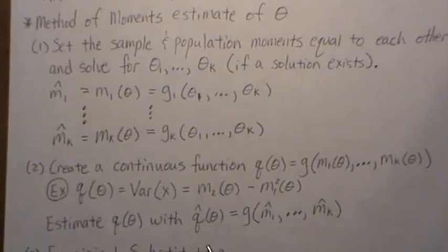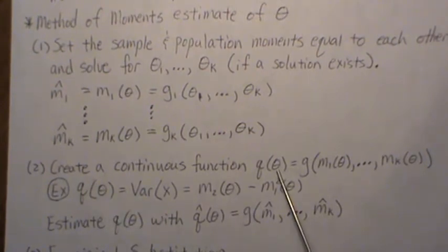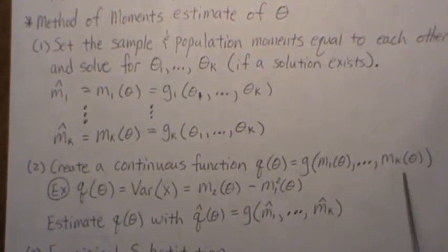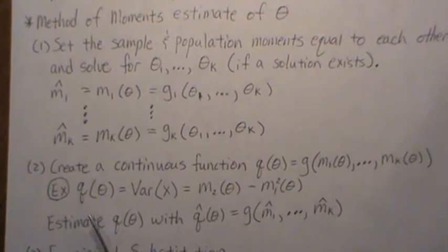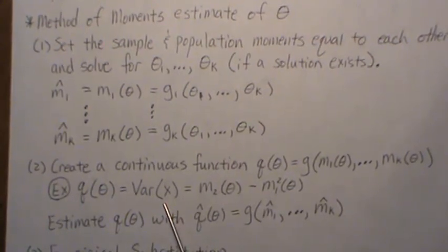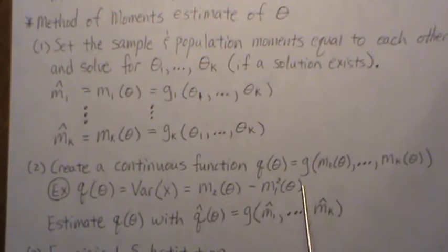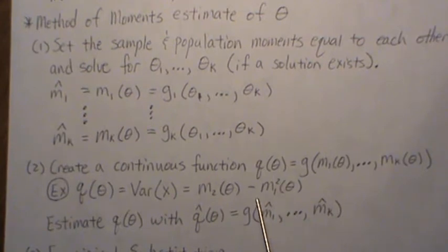Another way to think about this is to create a continuous function of the population moments, and then we estimate this function. Here's a quick example: let q(θ) be the variance of x, which is a function of the moments. Here's the second moment minus the first moment squared—this is the variance.